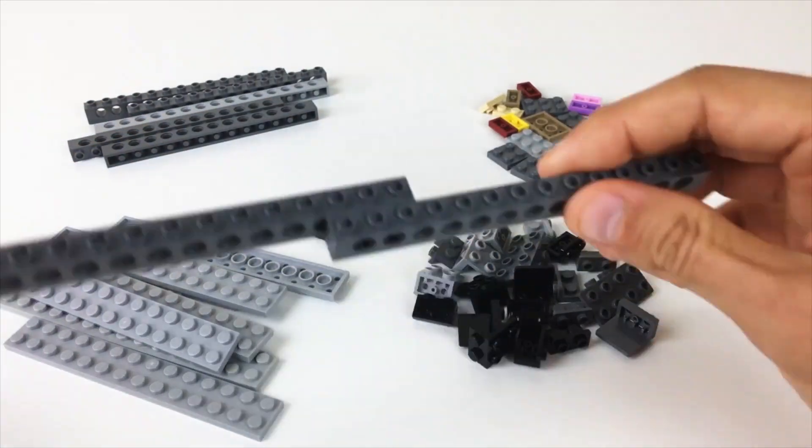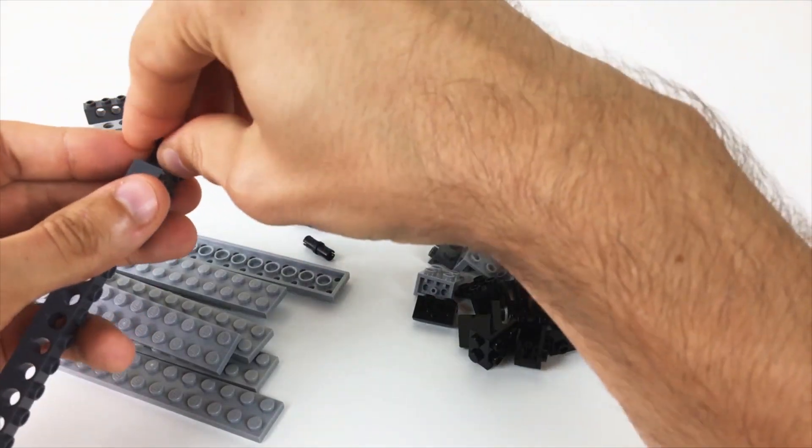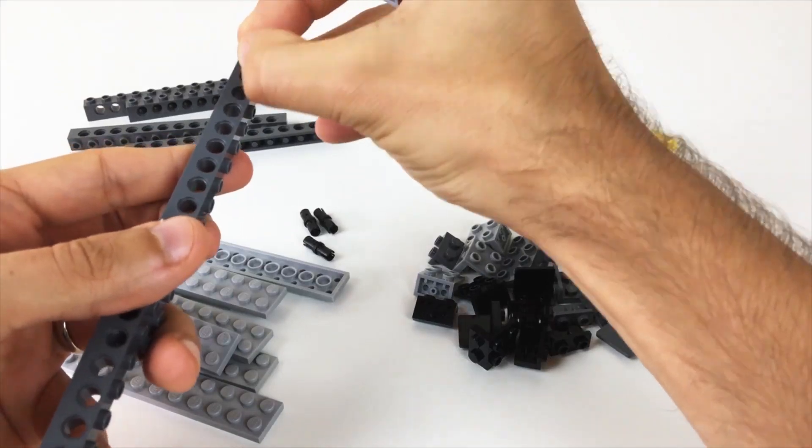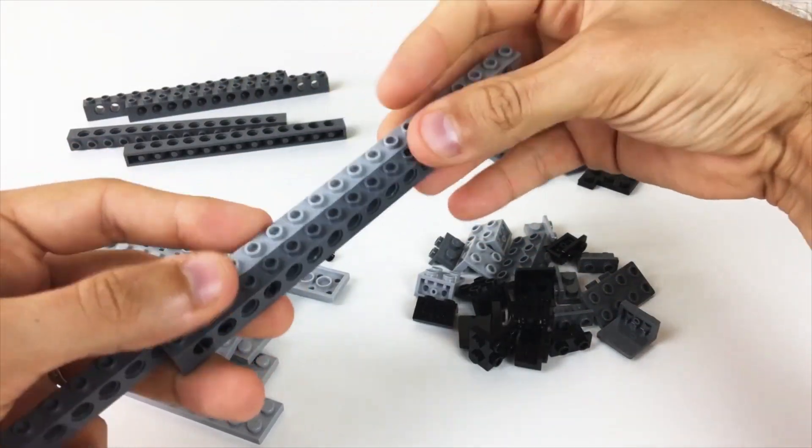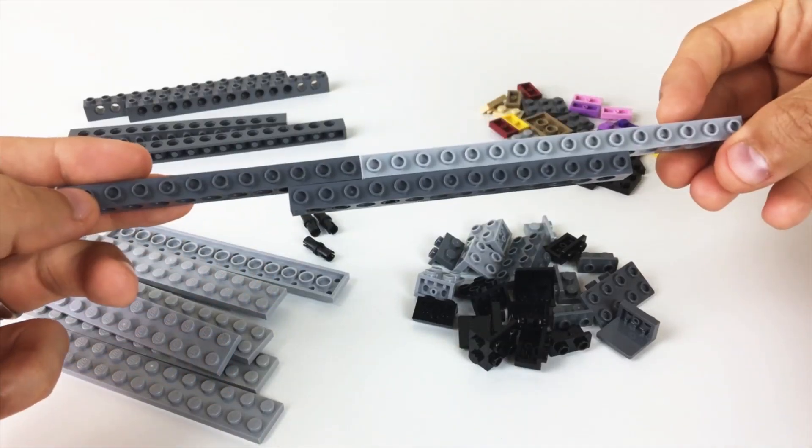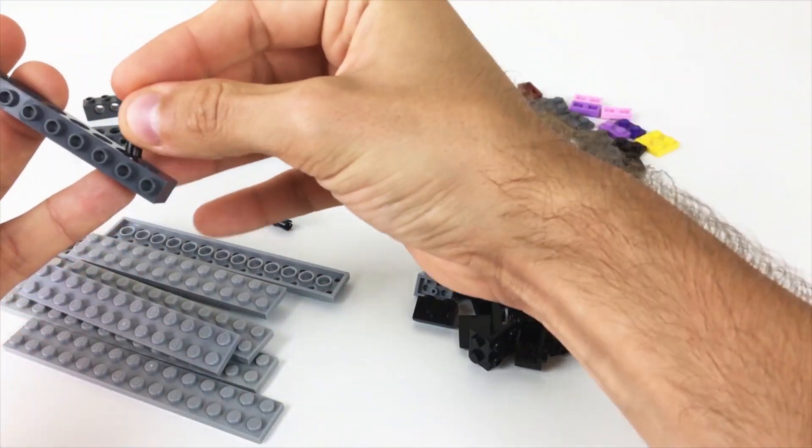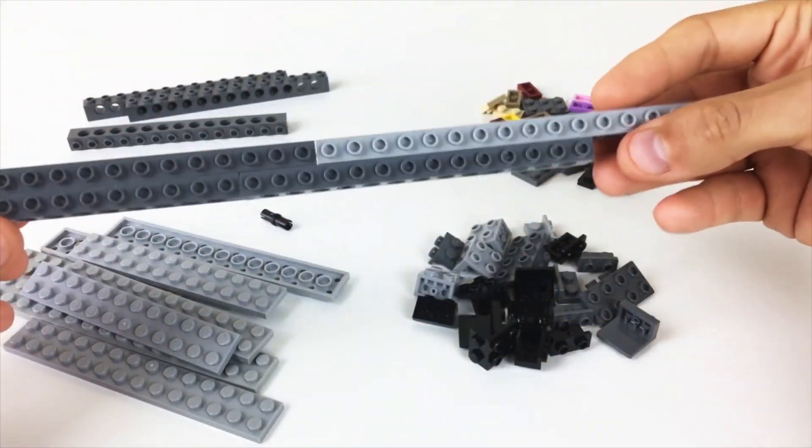So I would start by building my main structure down the middle using these Technic beams. I always call them beams, I don't know why - they kind of look more like construction beams I guess. But you know, Technic bricks, and in that way you're just kind of creating a really sturdy central base for what is going to accommodate all of the weight of your structure.